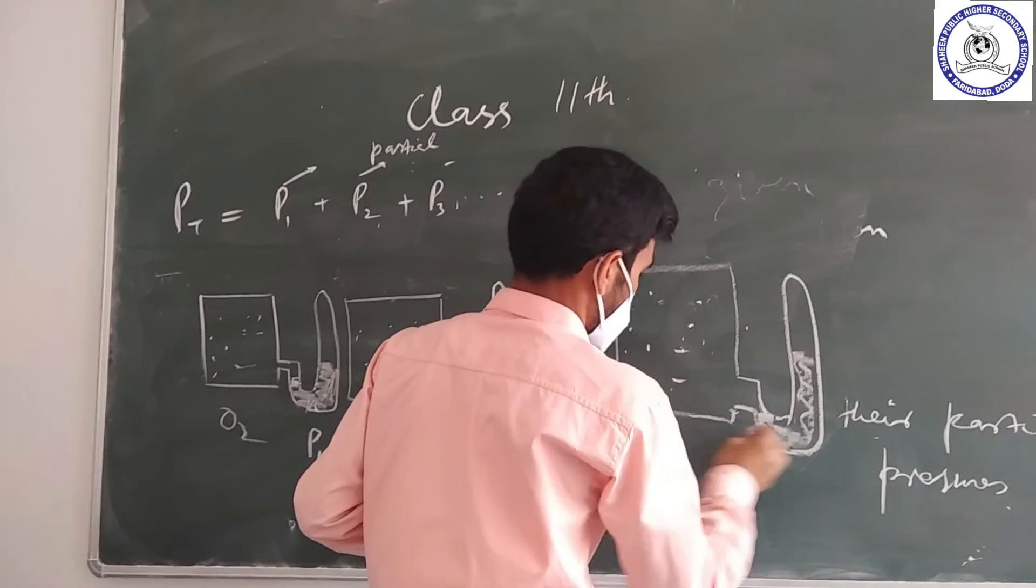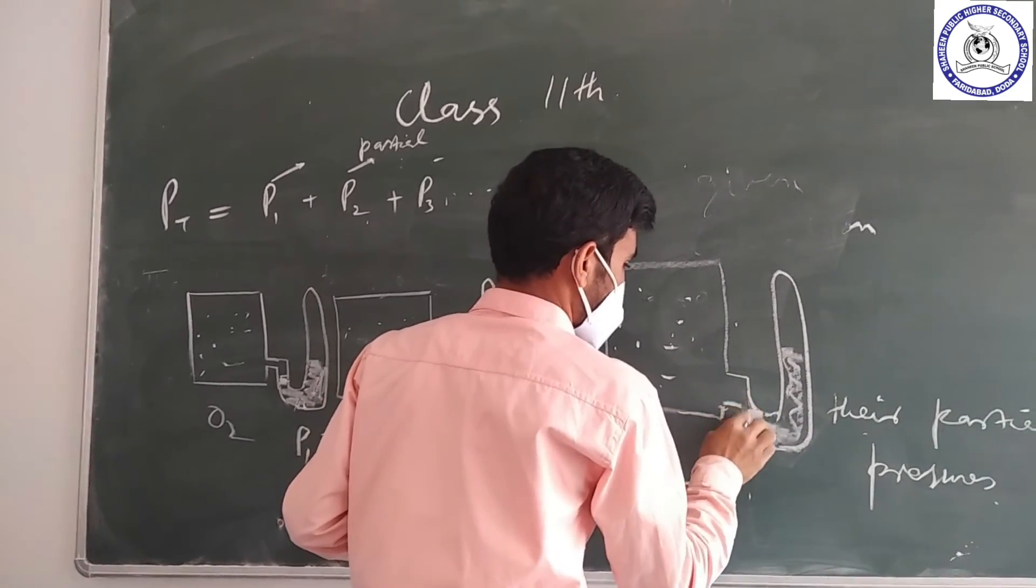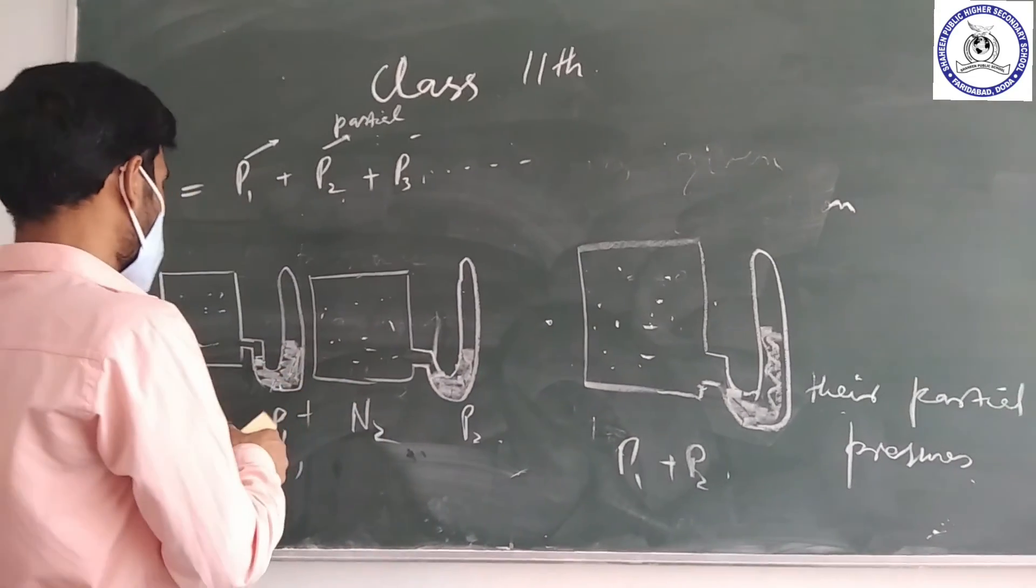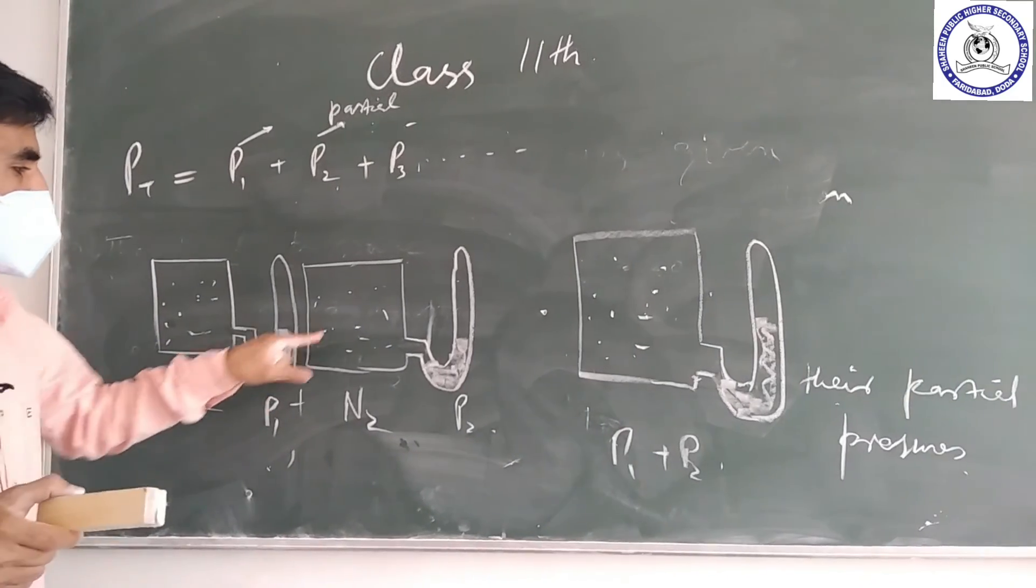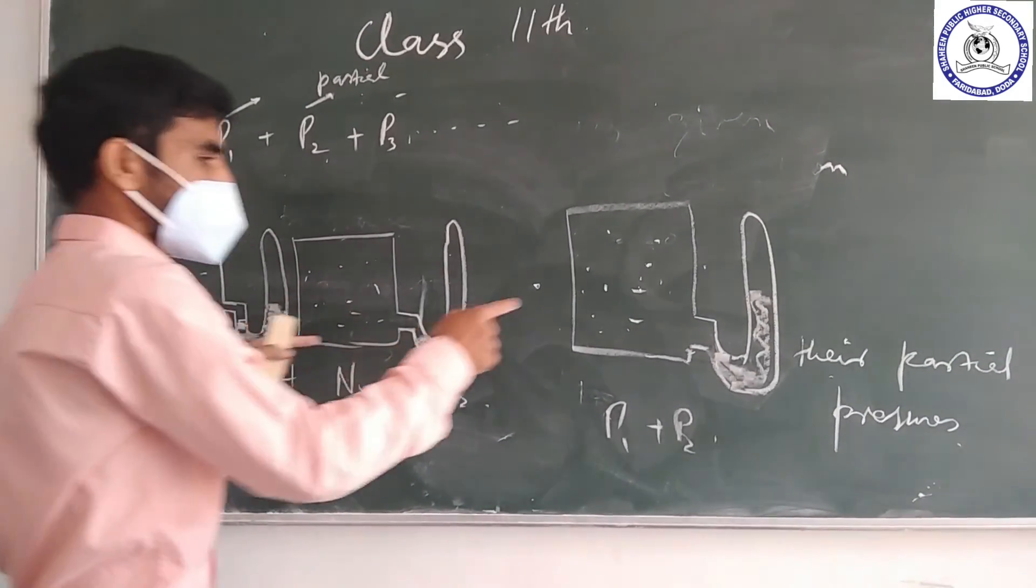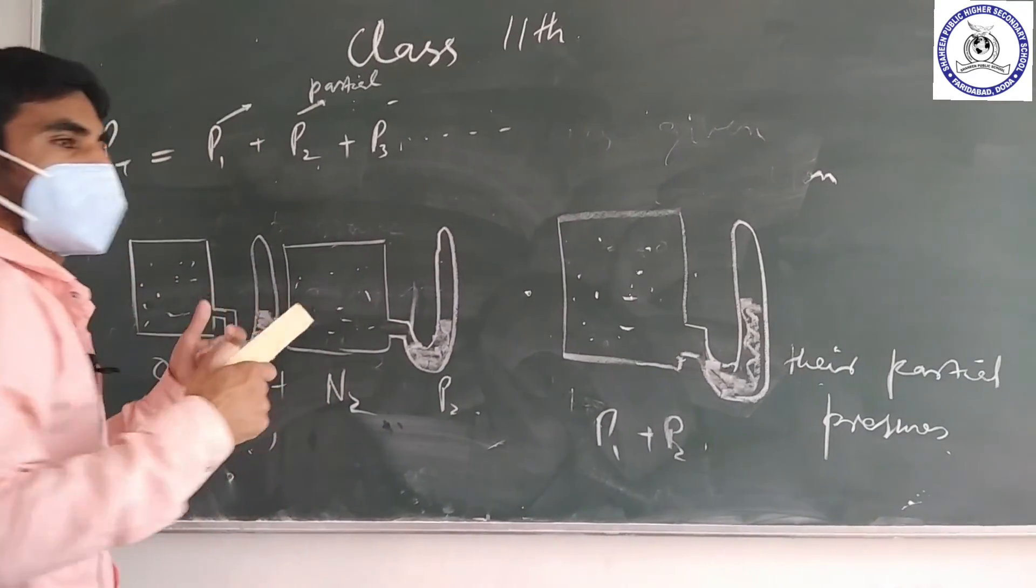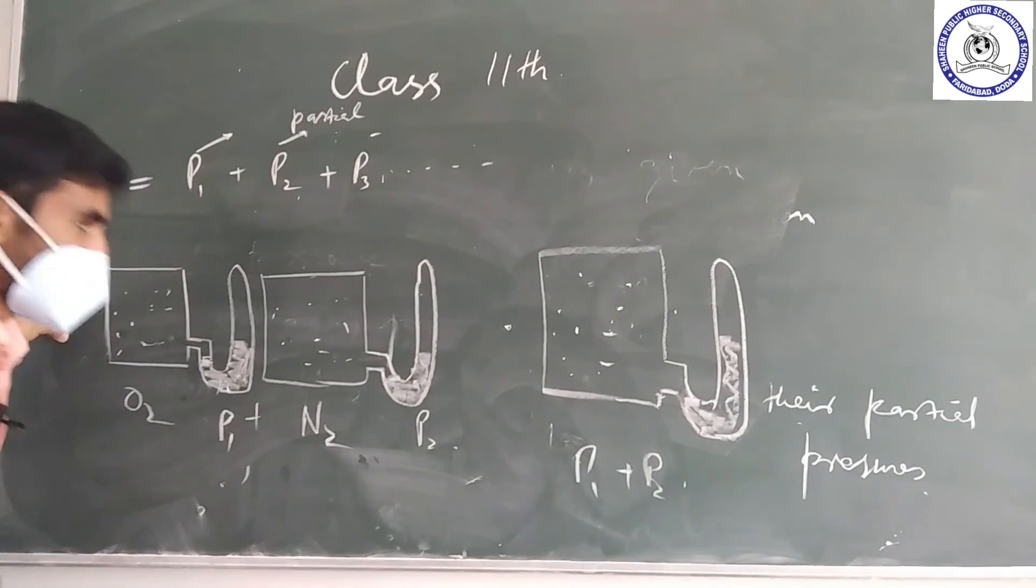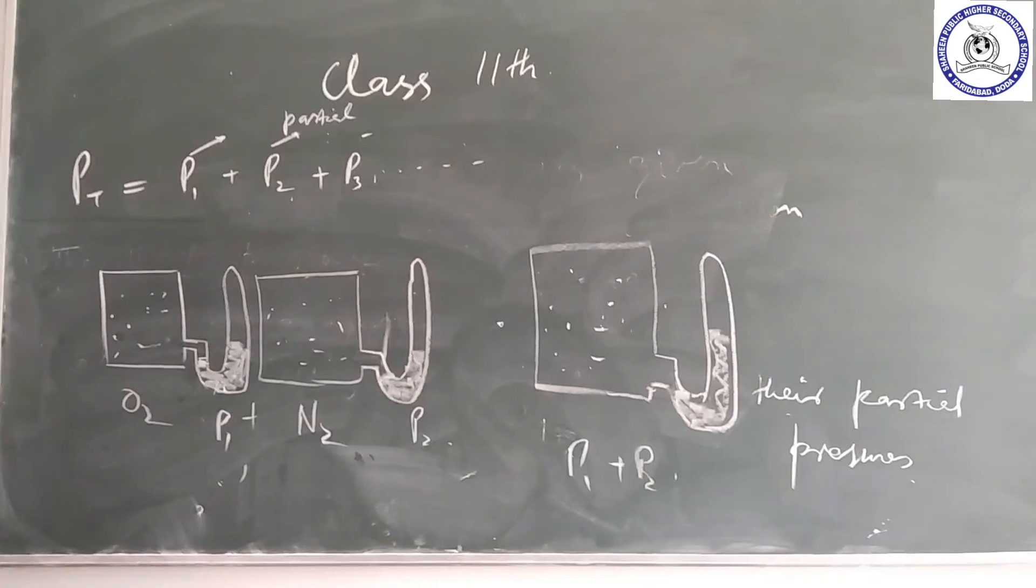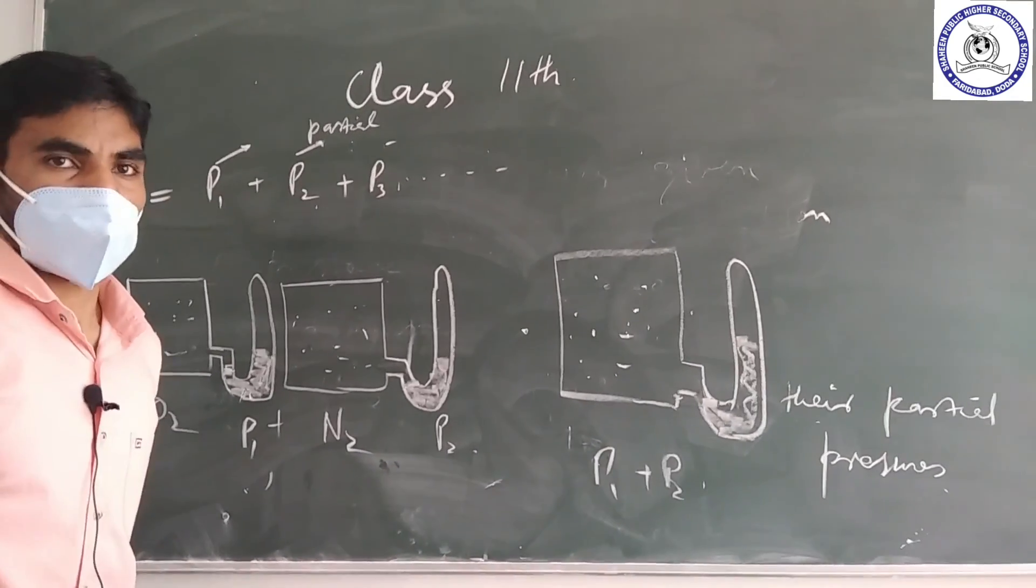This pressure will be the sum of P1 and P2. This is an experimental law - experiment can prove it. You can have one pressure in one container and another pressure in another container, and then if you bring both into the same container, the pressure will be the sum. So the law is proved - that the total pressure equals the sum of partial pressures. This is the law.